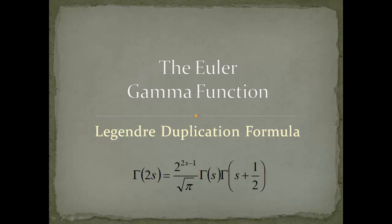Now, how does the Legendre duplication formula look like? We have gamma of 2s equals 2 to the 2s minus 1 over square root of pi. The square root of pi should remind you of gamma of 1/2. We have gamma of s multiplied with gamma of s plus 1/2 — a product of two gamma functions — so we can imagine that the beta function could play a role in the derivation.